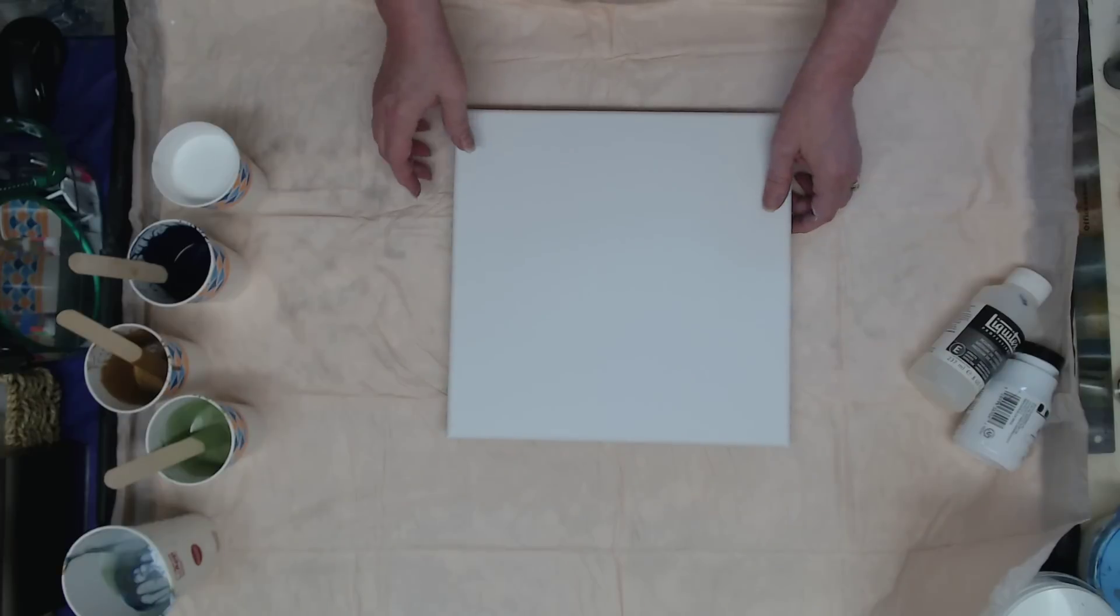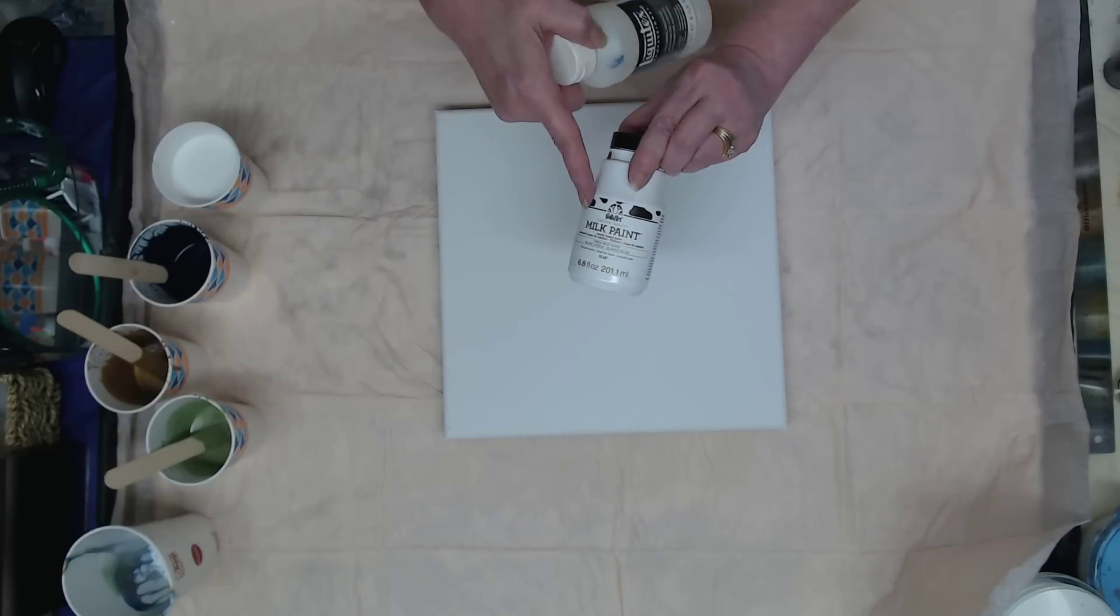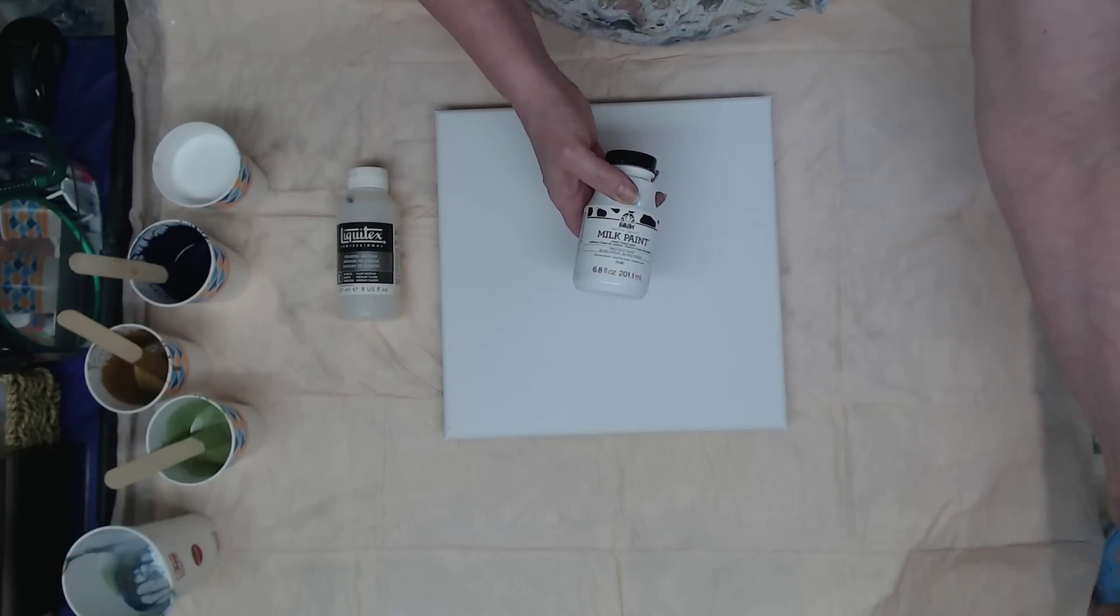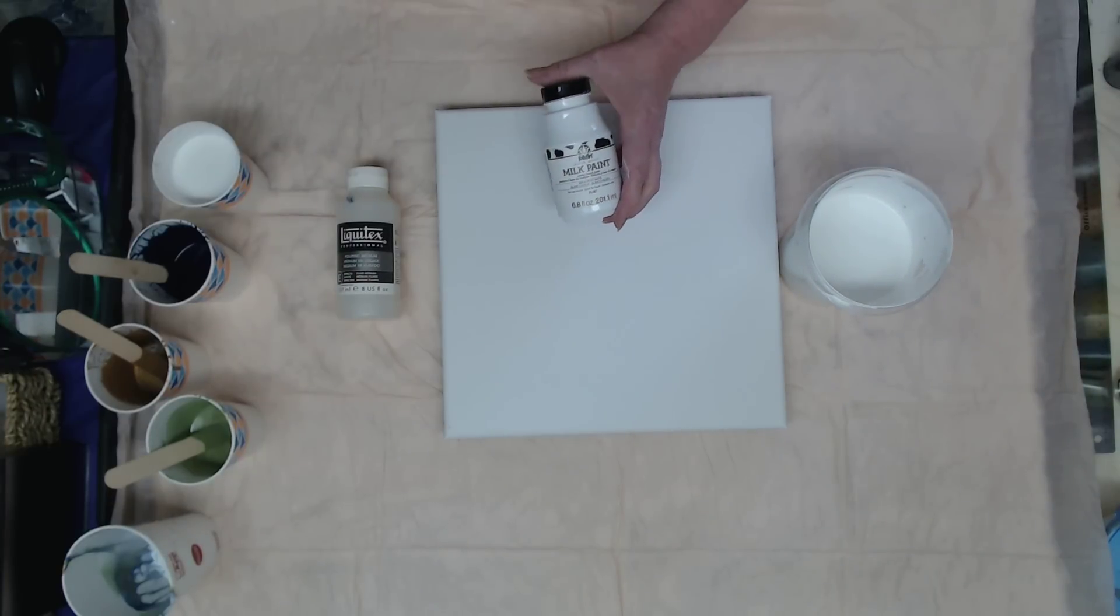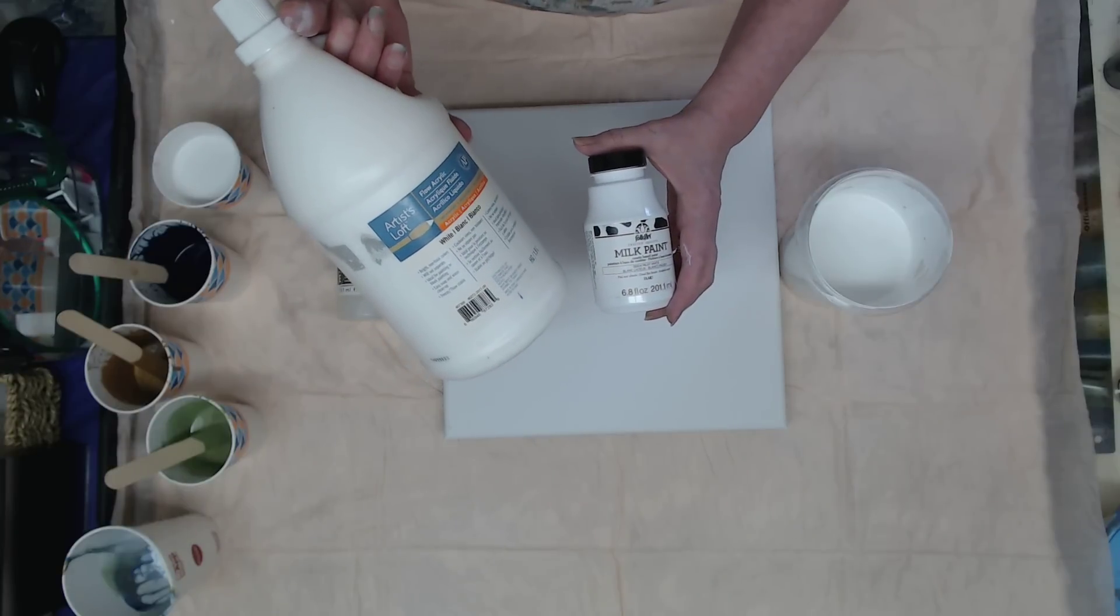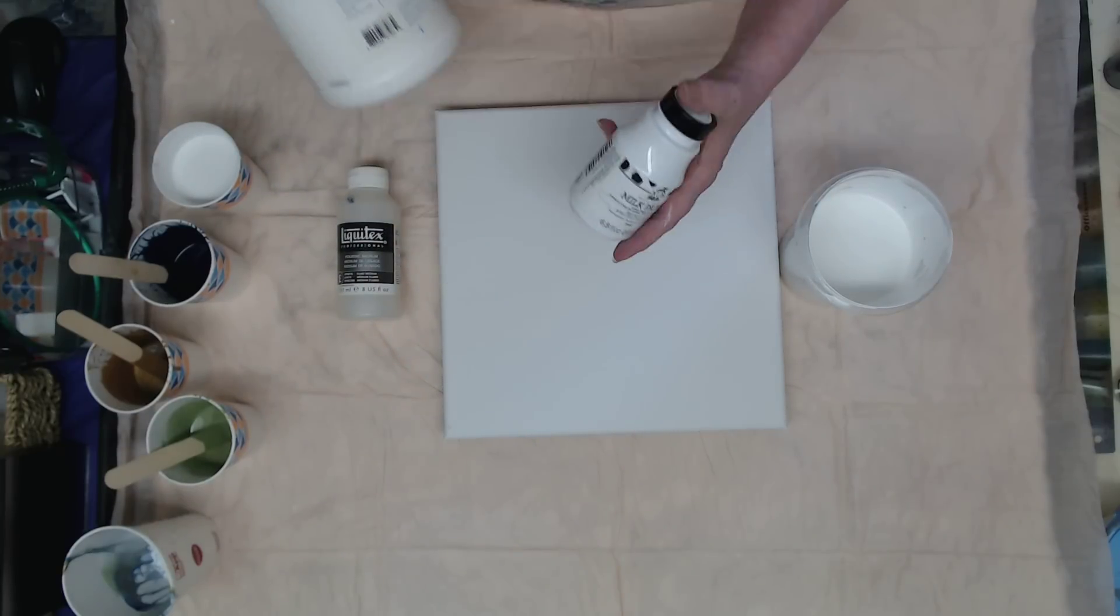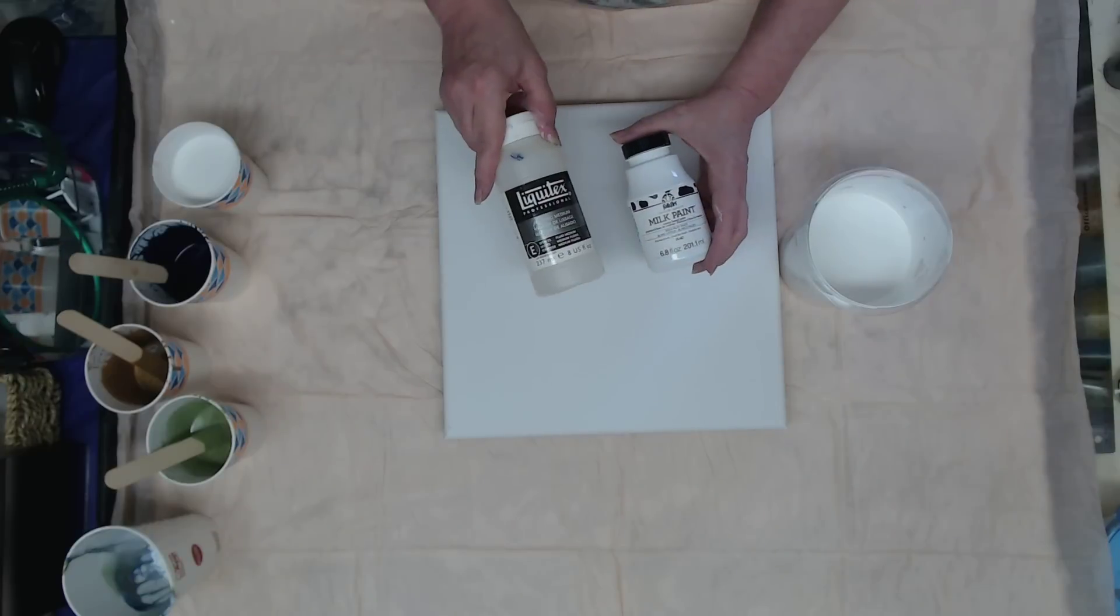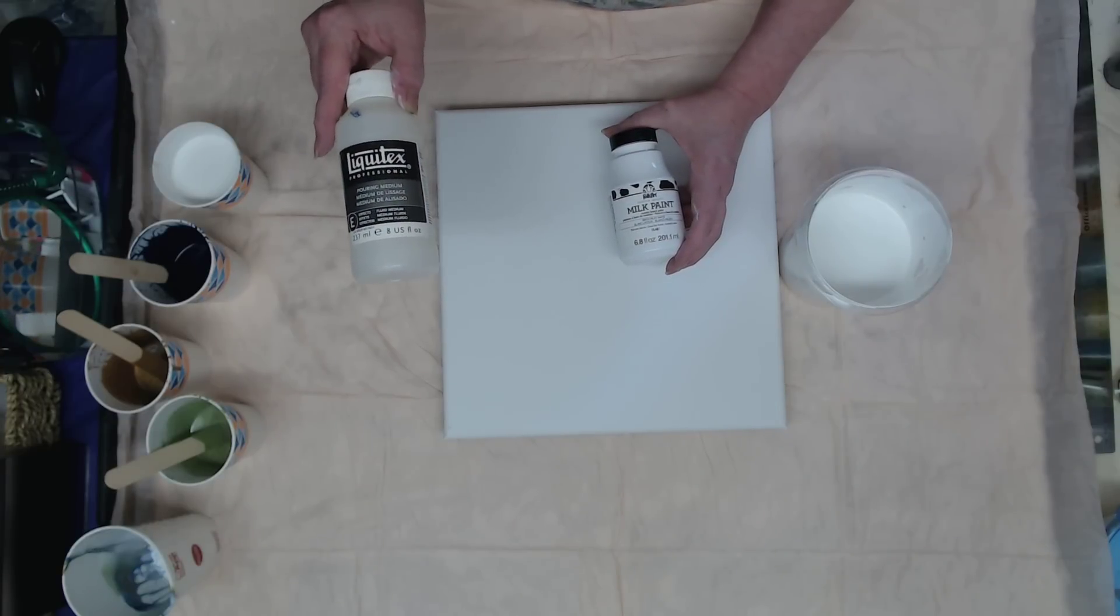So if you haven't watched the last video, check that out. But what we're doing is the milk paint experiment. I used a bottle of milk paint and I mixed it in this big jug with equal parts artists loft acrylic flow. So 6.8 ounces of this, 6.8 ounces of this, and I did about 3.4 ounces of liquitex pouring medium.